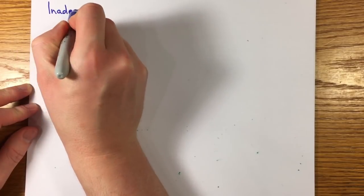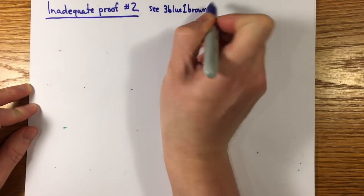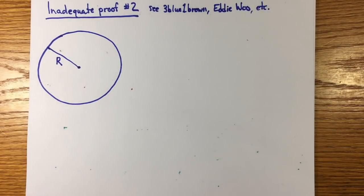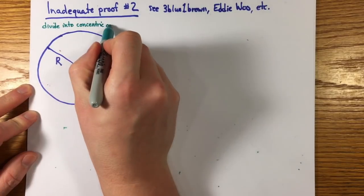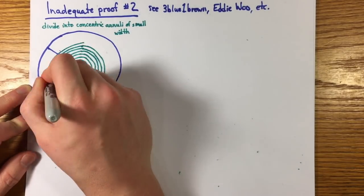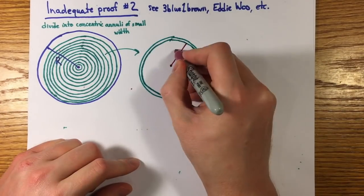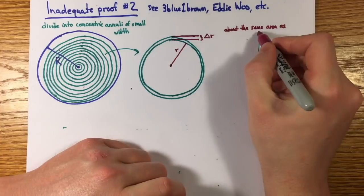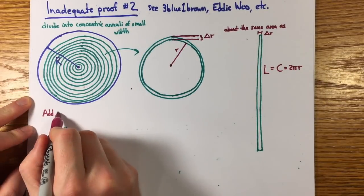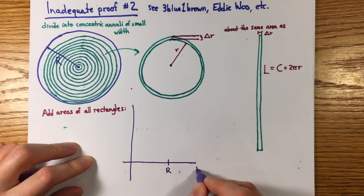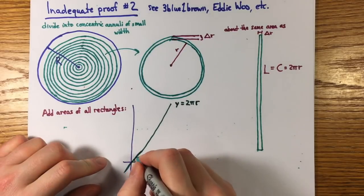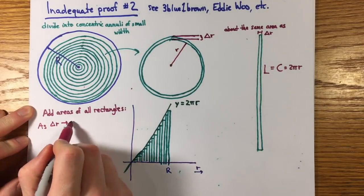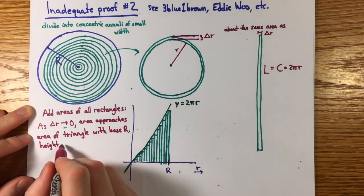There's also this popular method I'm going to call inadequate proof number two of the area of a circle. I've seen this method on 3 blue 1 brown and Eddie Wu and some other places. I have nothing against them, but maybe you'll see why I don't like this method of proof. It involves dividing the circle into lots of thin annuli bounded between concentric circles. The annulus at radius r looks almost like it could be uncurled to look something very close to a rectangle of length of circumference at radius r, which is 2 pi r, and width delta r. Summing the area of all these rectangles in the limit as delta r goes to zero, which is what integration is, should give the area of the whole circle as the area under this line, which is that of a triangle with base capital r and height 2 pi capital r, so the area is pi r squared.